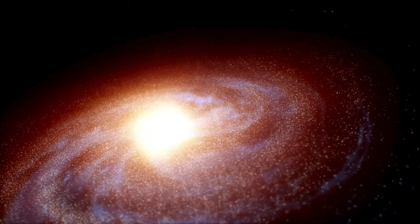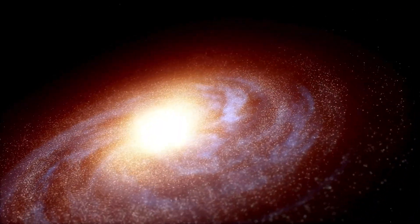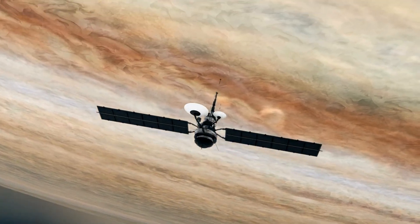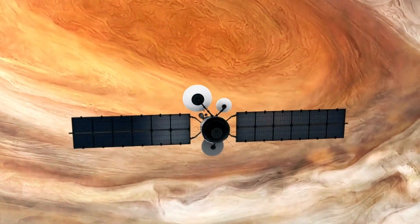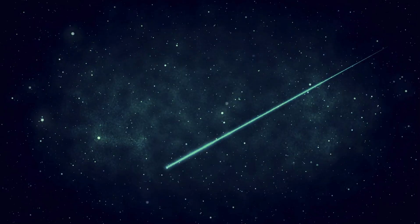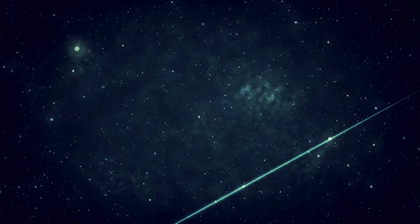Voyager 2 launched on August 20th, 1977, only 16 days ahead of its twin Voyager 1. Its goal was ambitious: to exploit a once-every-176-years alignment of the planets.